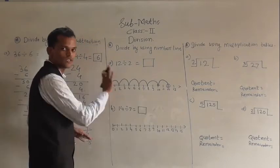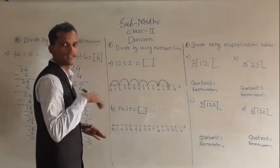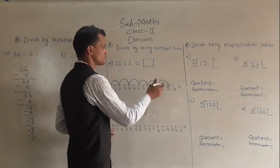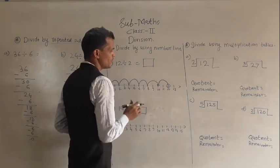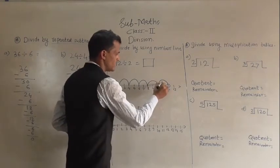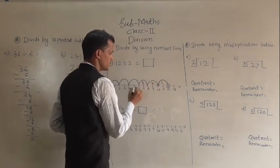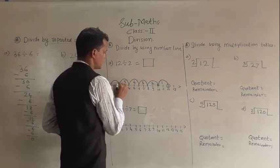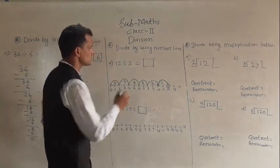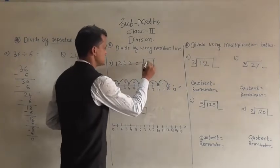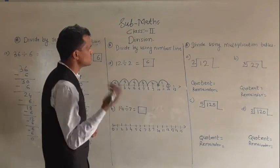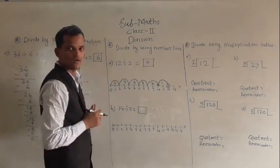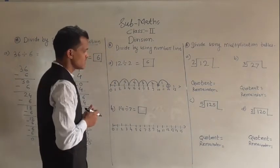When 0 comes, stop and count how many times you counted backward: 1, 2, 3, 4, 5, and 6 times. So 6 is the answer. You can verify: 6 twos are 12, so our answer is correct.